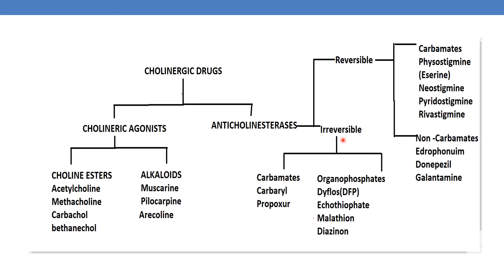Coming to irreversible anti-cholinesterases, they are again categorized into carbamates and organophosphates. Examples of irreversible anti-cholinesterase carbamates are carbaryl and propoxur.